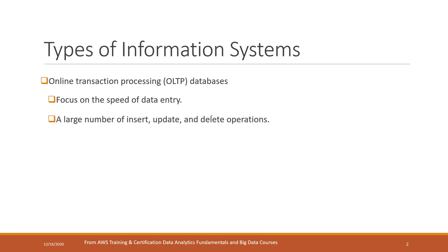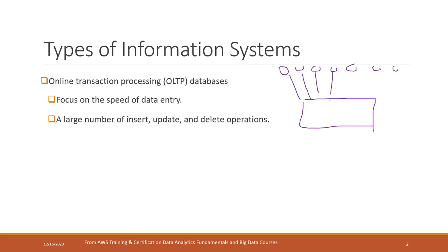This type of system mainly focuses on the speed of entry. We will receive a lot of insert, update, or delete operations. For example, a bank like Bank of America has a database or database cluster with a lot of users making transactions each single day. Those transaction records are inserted into the database system — you can imagine millions of records each day, being inserted, updated, or sometimes deleted. That is a very typical online transaction processing system, or OLTP.